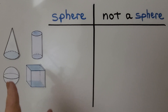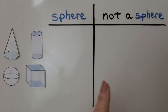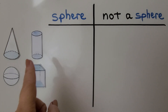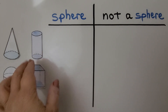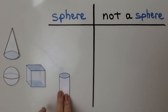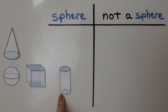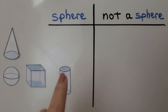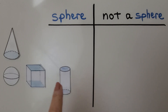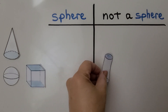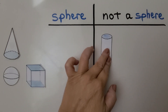We can sort these shapes into sets of sphere and not a sphere. Is this shape a sphere? What do you think? No, it's a cylinder with two flat surfaces. It has a curved surface, but it has two flat surfaces, and a sphere does not have flat surfaces. So this is not a sphere.